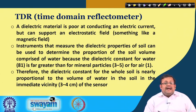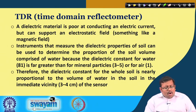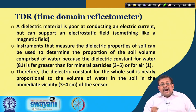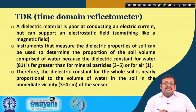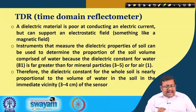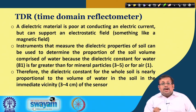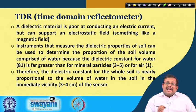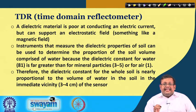Another method is called TDR or Time Domain Reflectometer. The TDR works on the principle of time domain reflectometry. A dielectric material is poor at conducting electrical current but can support an electrostatic field. The TDR can measure the dielectric properties of soil, which can be used to determine the proportion of the soil volume comprised of water.